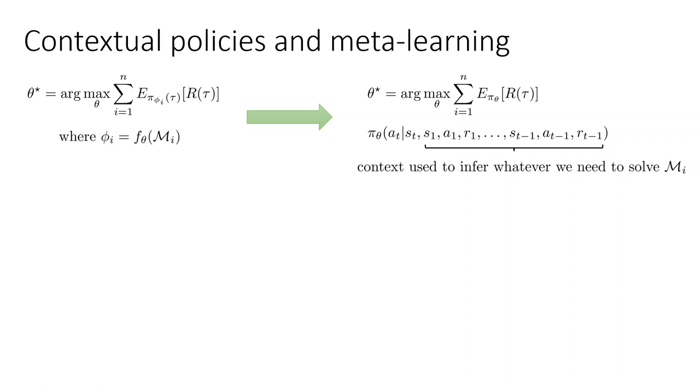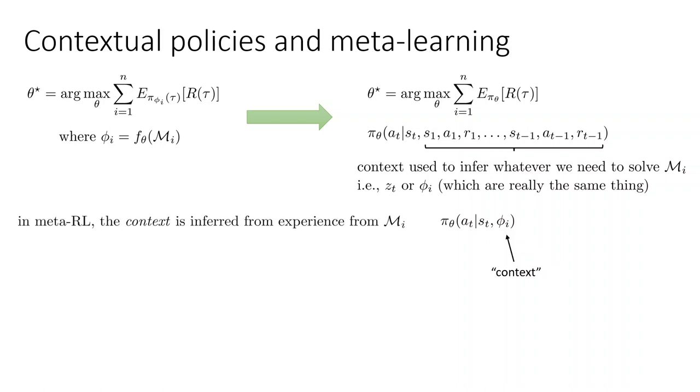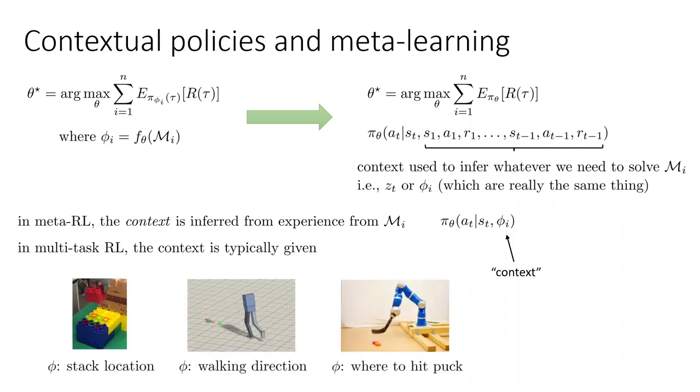So as long as you can feed all that experience into your policy, then you're doing meta learning. That is to say that the context, which we call z or ω or something like that, is the φ_i that we have here. So φ_i is basically the context in a contextual policy. The main difference is that when we talked about multitask learning before, the context was provided for us. Someone would just say, your job is to do the laundry, your job is to do the dishes. Now, the context is inferred from experience in M_i. So in multitask RL it was given. In meta learning, it's inferred.